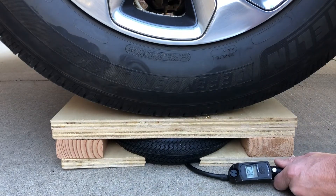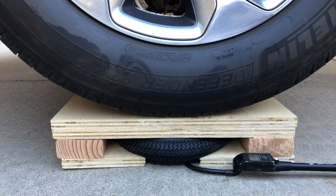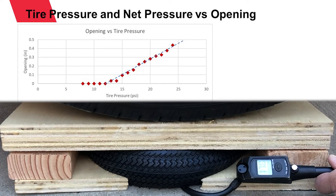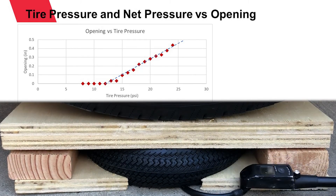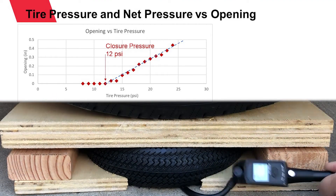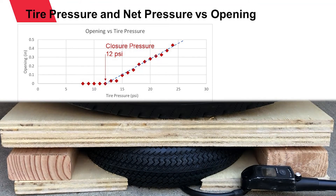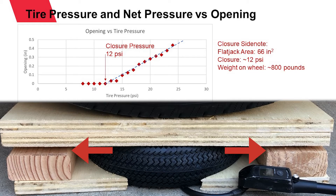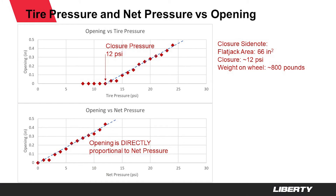Now let's inflate the wheelbarrow wheel, or flat jack, with some pressure and see what happens. Initially I increased the pressure in the flat jack or fracture, but opening remains zero. Once the flat jack pressure exceeds about 12 psi, increases in pressure result in opening as the flat jack carries part of the weight of the truck. This threshold is equivalent to the closure stress we measure in the field in a diagnostic fluid injection test, or DFIT. Note that from the closure pick we can infer that about 800 pounds of truck weight rests on this wheel.